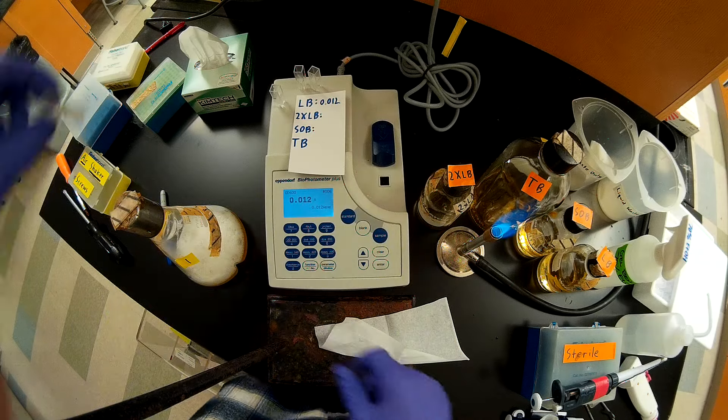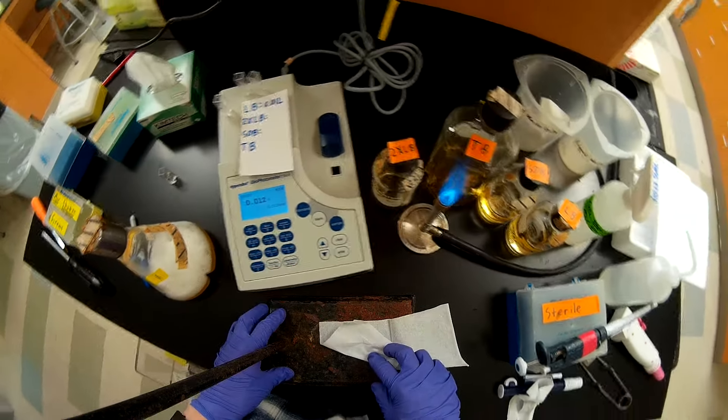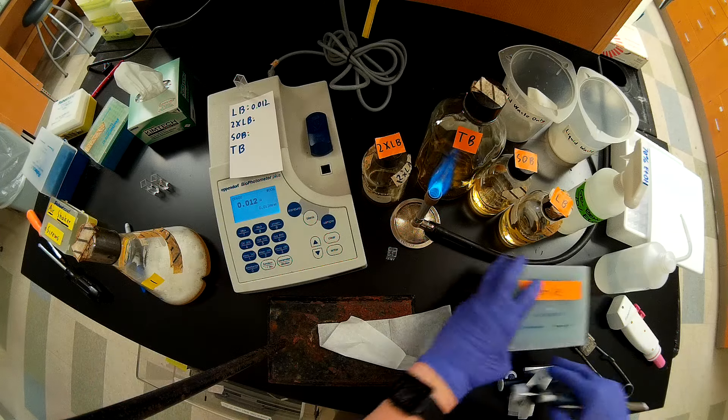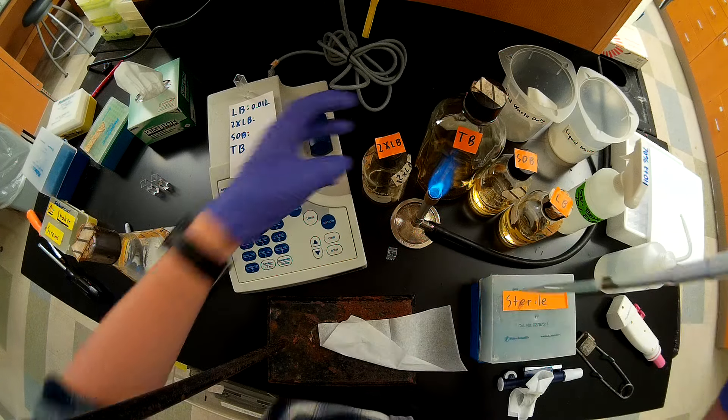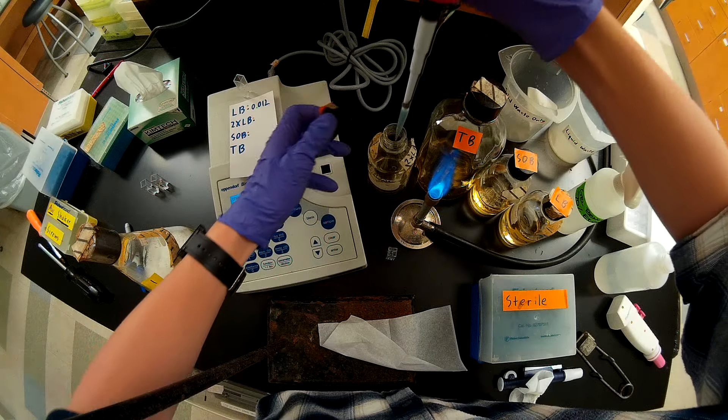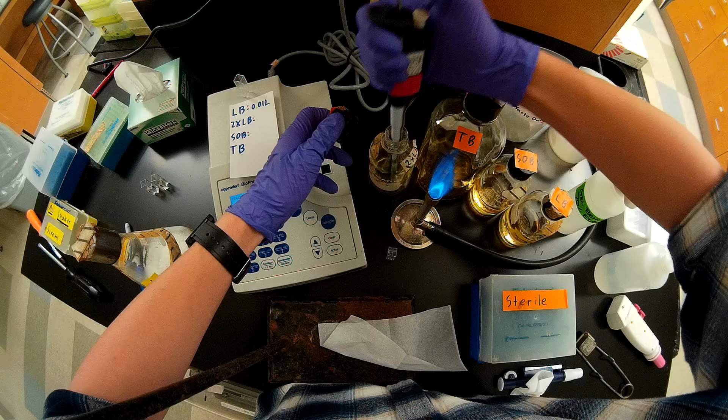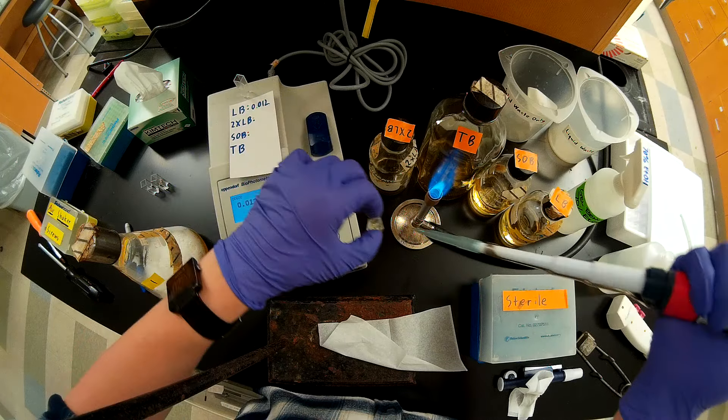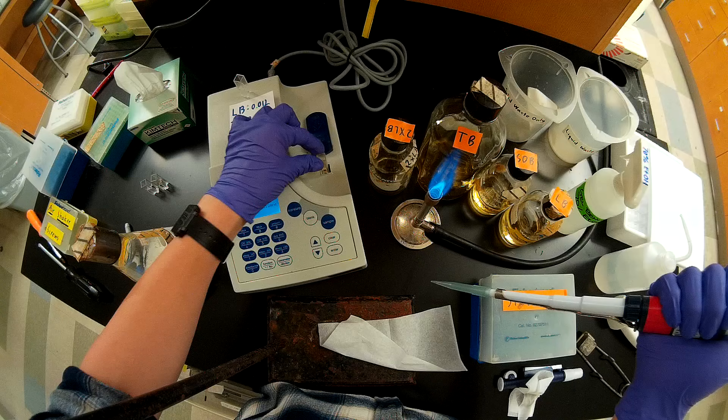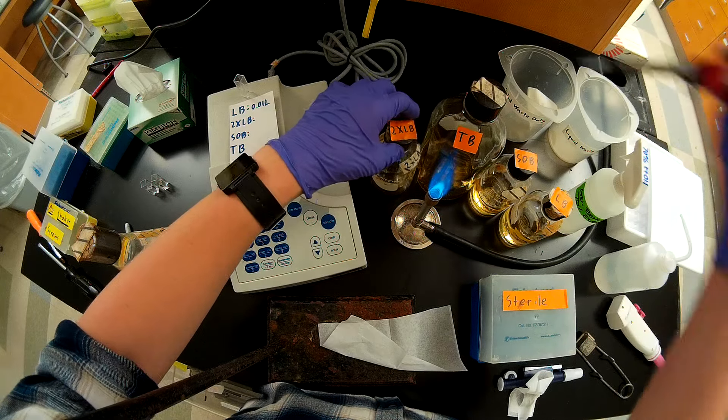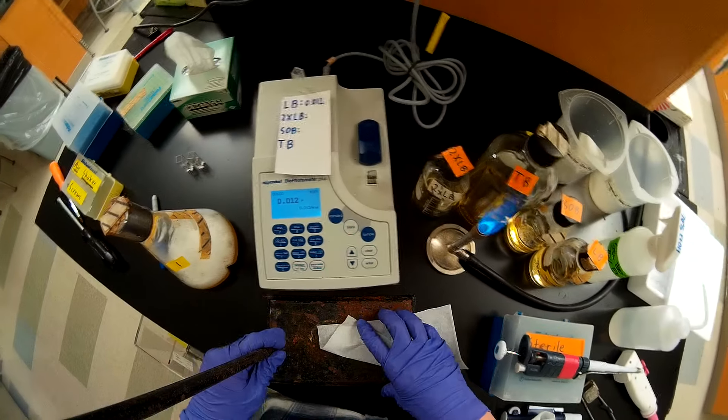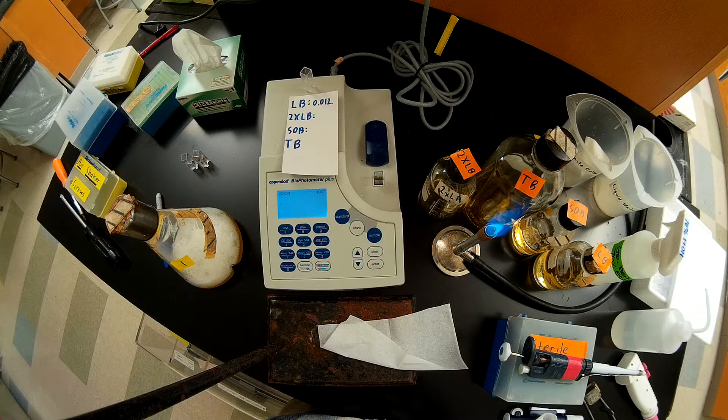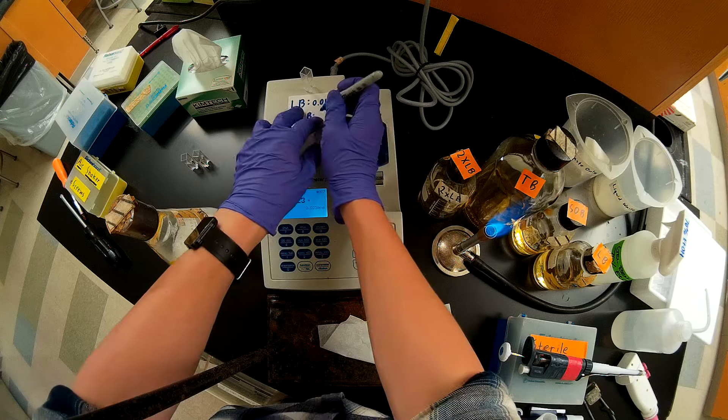And now I'm going to do 2XLB. So that's basically twice the concentration of organics as you would have in normal LB. Again, these cuvettes aren't sterile, so once you pipette something into there, you can consider that sample sacrificed. You're not going to use that again. So compared to water, 2XLB gives an OD-600 of 0.023, which is pretty much twice that of LB, which makes sense.